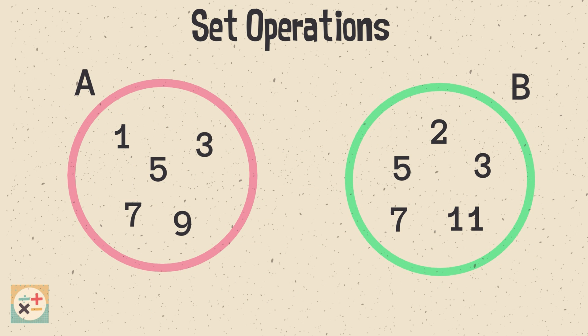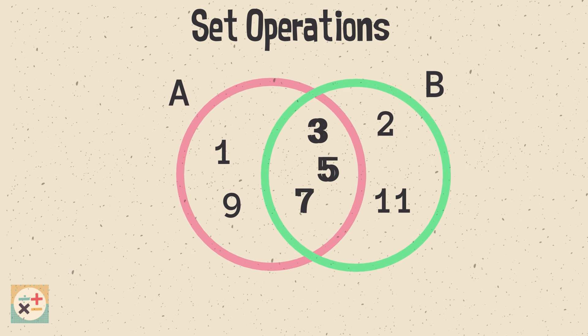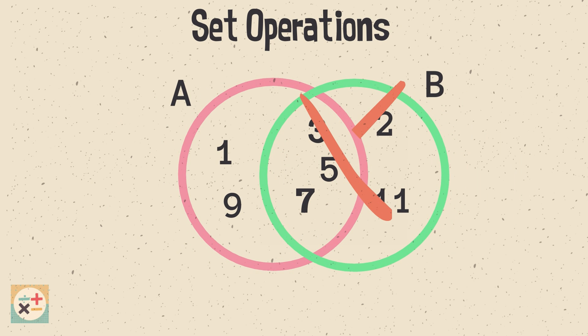If we create an intersection of A and B, we can take away the elements that occur in set B. We can see that the elements 1 and 9 are included in set A but not set B.